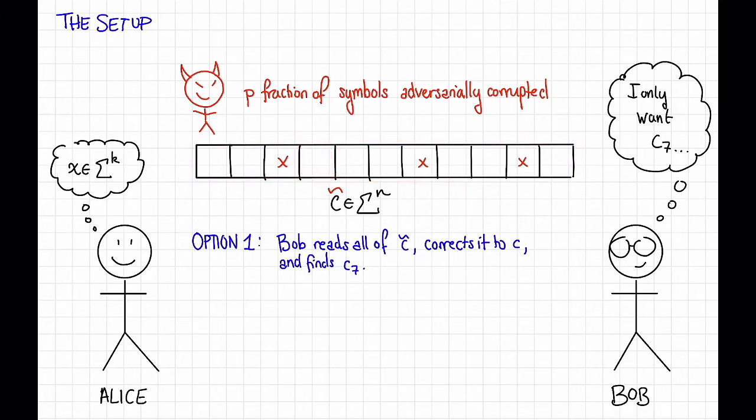If there weren't any errors, Bob would just go ahead and look at the seventh symbol. If he's given this code word c as an array, he can do that in constant time, and he'd be happy. The issue is, what if the bad guy, being very mean, happened to corrupt that seventh symbol?